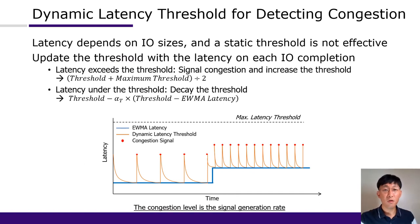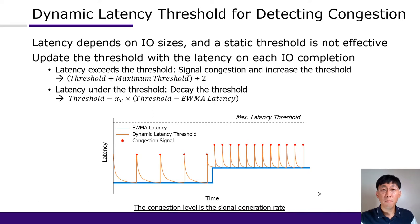From these observations, we designed a delay-based congestion control with a dynamic latency threshold as an SSD-specific optimization. The question is: what threshold determines the congestion state? In SSD, desirable thresholds differ for different IO sizes — a high threshold fails to detect congestion for small IO, while a low threshold fails to fully utilize device bandwidth. Instead of a static threshold, Jimbo uses a dynamic latency threshold. Jimbo updates the EWMA latency and threshold on each IO completion, increasing the threshold if IO latency exceeds the current threshold and decaying it when latency is under the threshold. Because read and write IO latencies have different characteristics, Jimbo manages them separately, though the generated signal is treated the same.